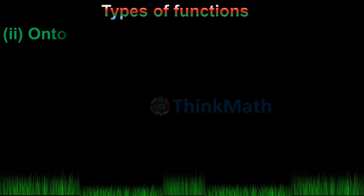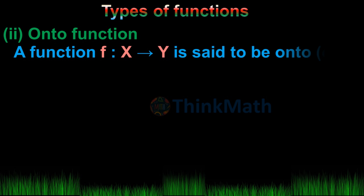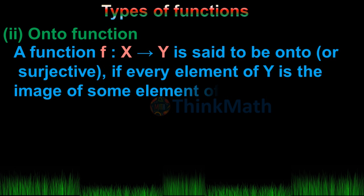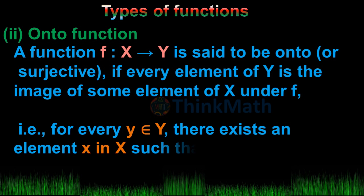Onto Function: A function f from x to y is said to be onto or surjective if every element of y is the image of some element of x under f. That is, for every y belonging to y, there exists an element x in x such that f(x) equals y.